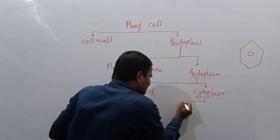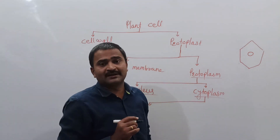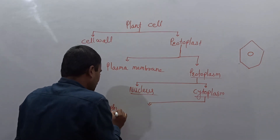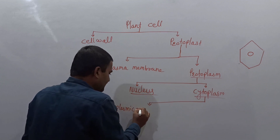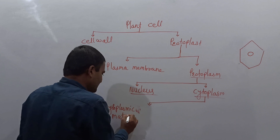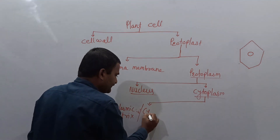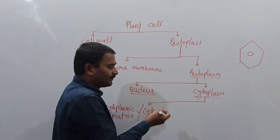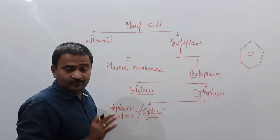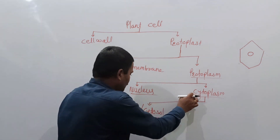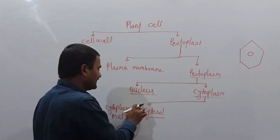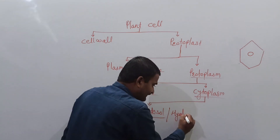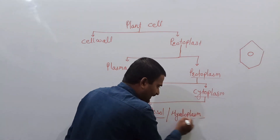We can further differentiate this cytoplasm. The cytoplasm can be divided into the cytoplasmic matrix — also called cytosol. Many people use cytoplasm and cytosol as the same term, but they are different. The liquid, jelly-like matrix of the cytoplasm is called cytosol, or it is also called hyaloplasm.